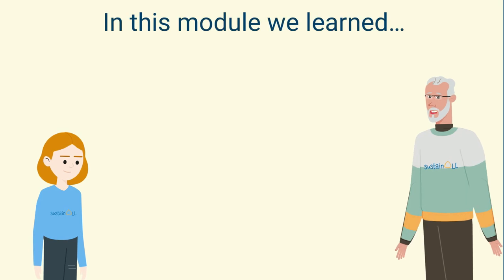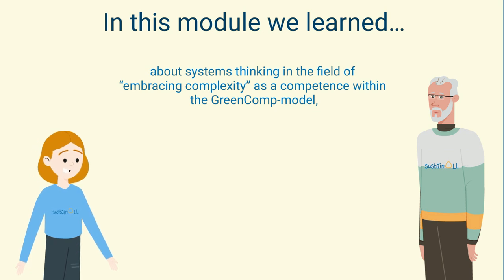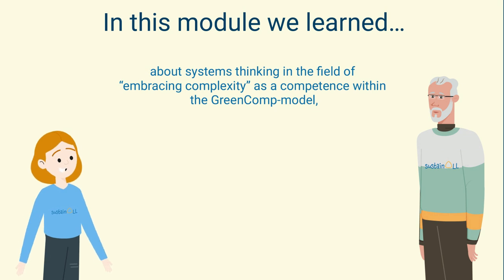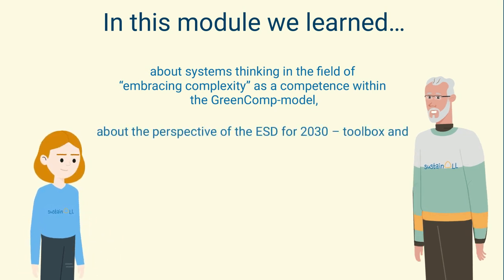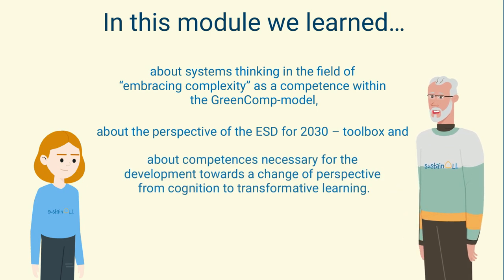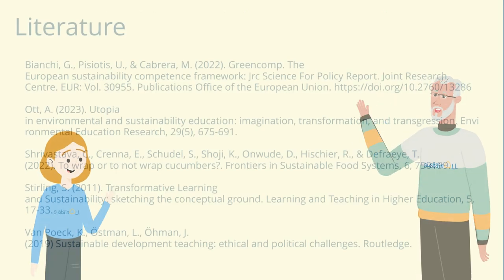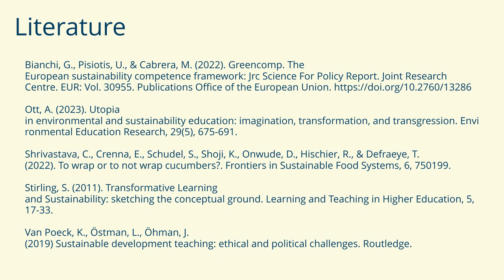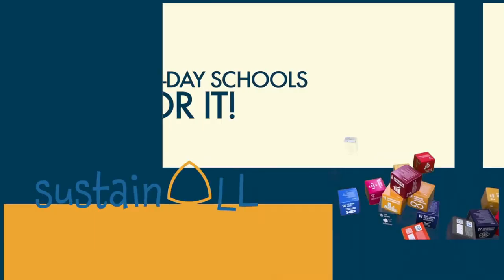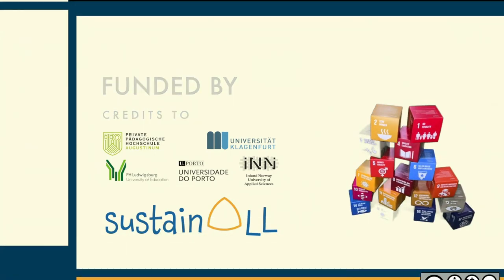To conclude what we have worked through in this module: we looked at systems thinking using an example from the ESD action area embracing complexity, and provided an overview of the competences in the GreenComp model. We presented the ESD for 2030 toolbox and raised the question of which competences are necessary for a change of perspective for a good future. We'll see you next time.